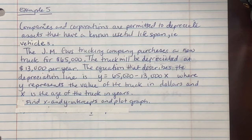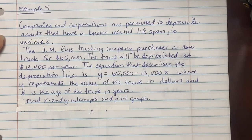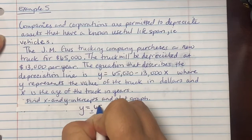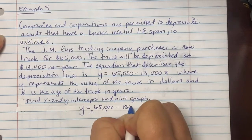Example 5. Companies and corporations are permitted to depreciate assets that have a known useful lifespan. For example, vehicles. The JMGUS trucking company purchases a new truck for $65,000. The truck will be depreciated at $13,000 per year. The equation that describes this depreciation line is y = 65,000 - 13,000x. Where y represents the value of the truck in dollars and x is the age of the truck in years. Find x and y intercept and plot the graph. So first thing, in order to find your x and y intercept, we're going to take our original equation that they gave us, y = 65,000 - 13,000x.